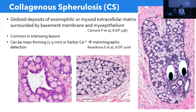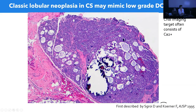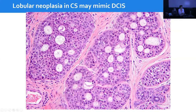Here is an example of collagenous spherulosis with a lot of calcifications that at low power may mimic a case of low-grade DCIS. Notice the monotonous proliferation and pseudocribriform spaces. This is collagenous spherulosis involved by classic lobular neoplasia, mimicking low-grade ductal carcinoma in situ. Sometimes the nuclei can even show some more atypia. How do we sort out these cases?